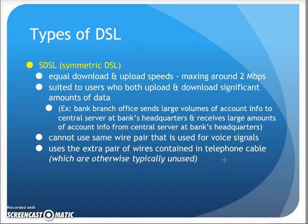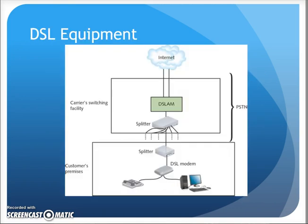SDSL — Symmetric DSL — provides equal upload and download speeds. This might be used by a bank branch office that uploads as much data as it downloads. It's a business-grade connection suited for connecting two branch offices together, though you'll pay a bit more for having the same speed in both directions.